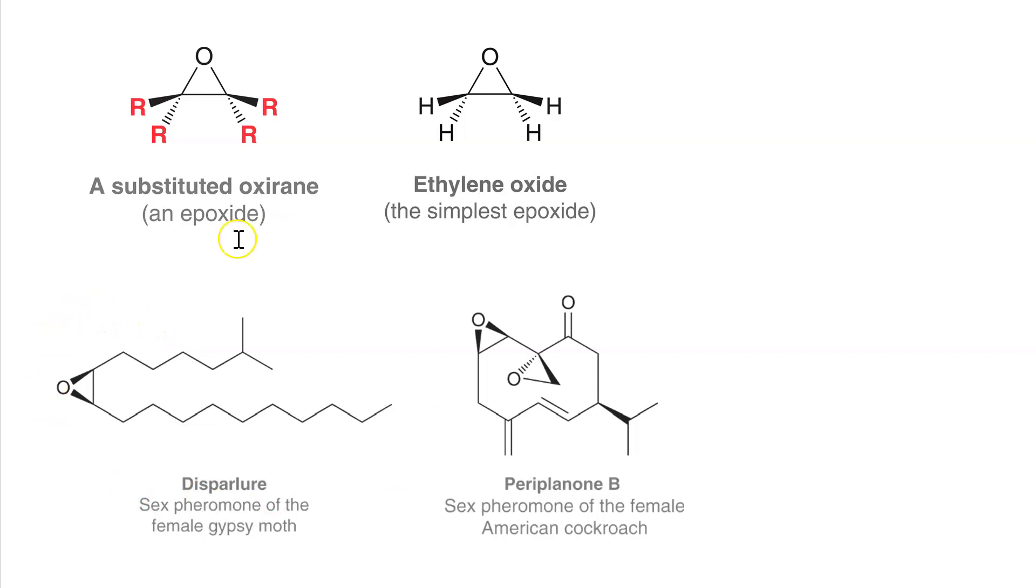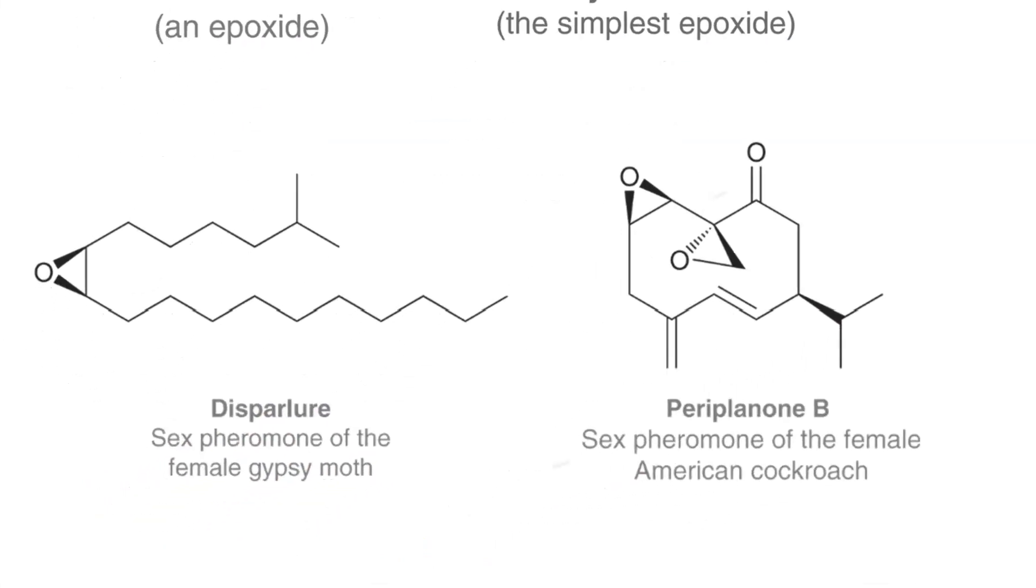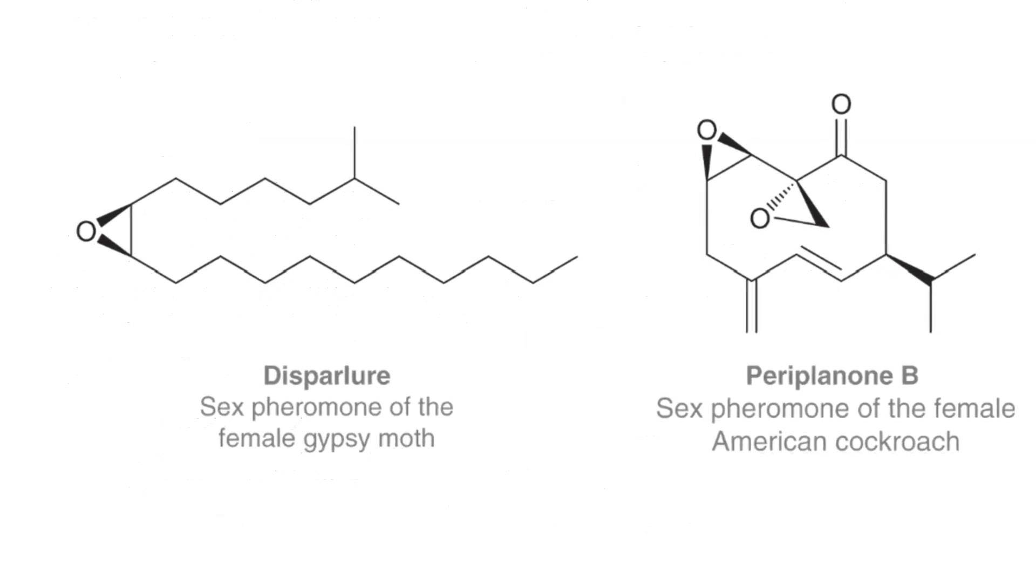And epoxides also show up in these natural compounds, like disparlure, the sex pheromone of the female gypsy moth. I bet you always wanted to know that. Epoxide or periplanone B, the sex pheromone of the female American cockroach.